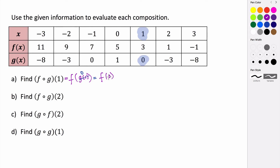So we're evaluating f at 0. We go back to our input and figure out when the input is 0, what is my value of f? We can see that f of x is equal to 5 when x is equal to 0. So 5 is f of g of 1.